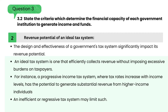2. The revenue potential of an ideal tax system — the design and effectiveness of a government's tax system significantly impact its revenue potential. An ideal tax system is one that efficiently collects revenue without imposing excessive burdens on taxpayers. For instance, a progressive income tax system, where tax rates increase with income levels, has the potential to generate substantial revenue from higher income individuals, while an inefficient or regressive tax system may limit such revenue.